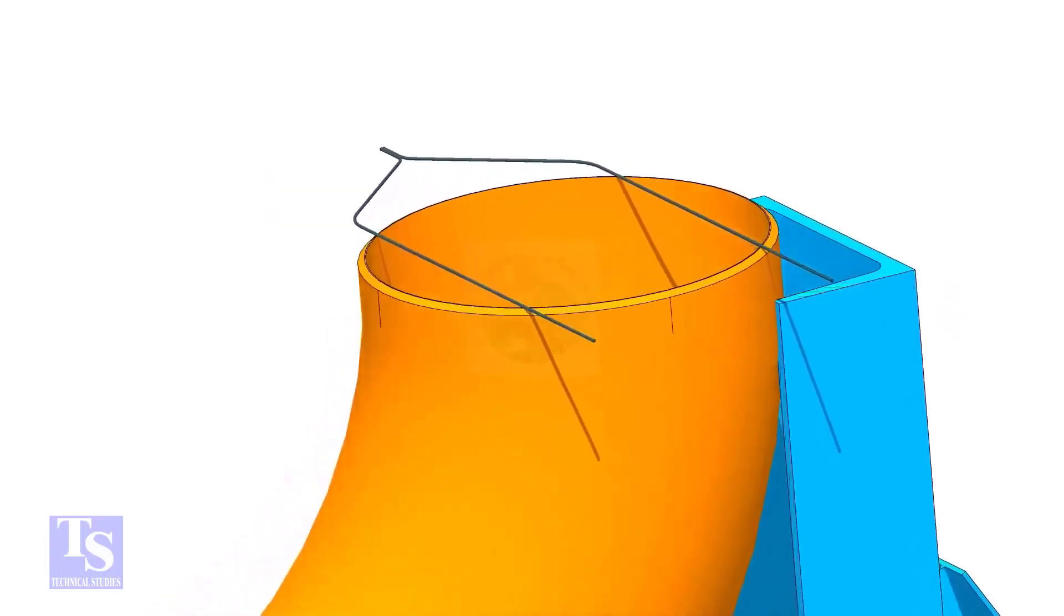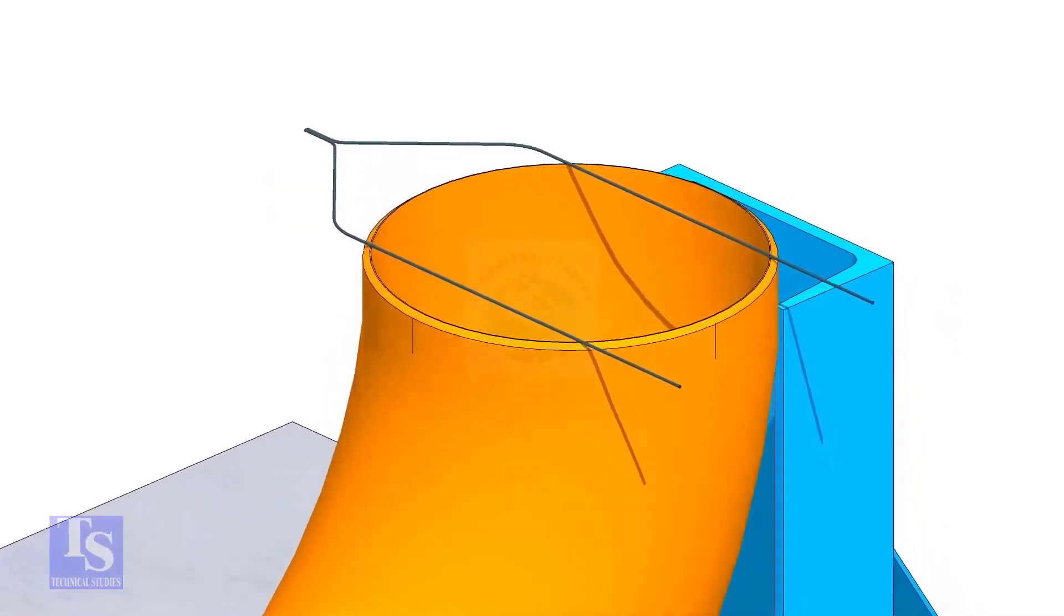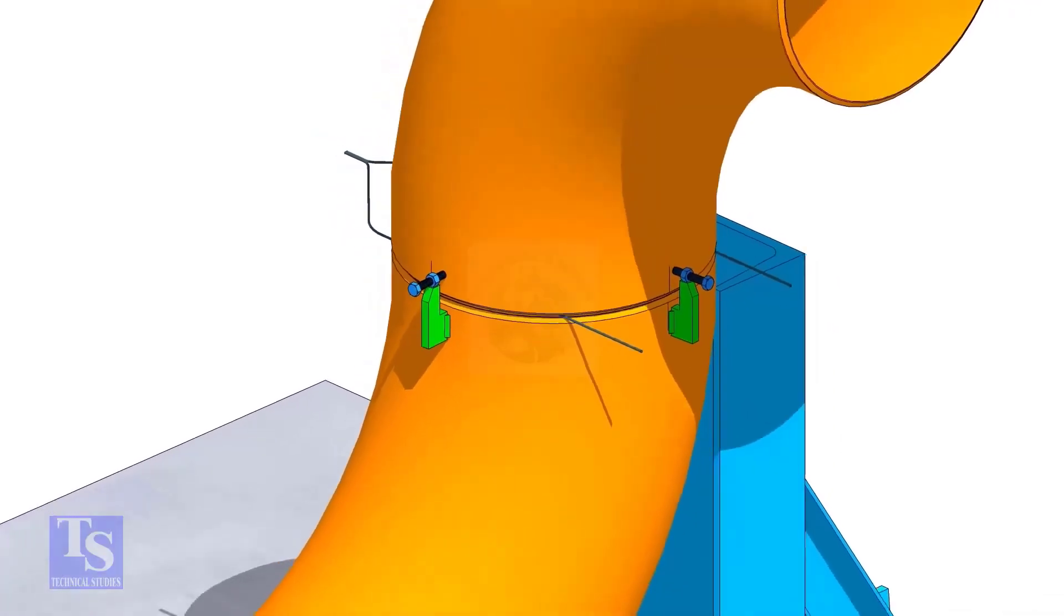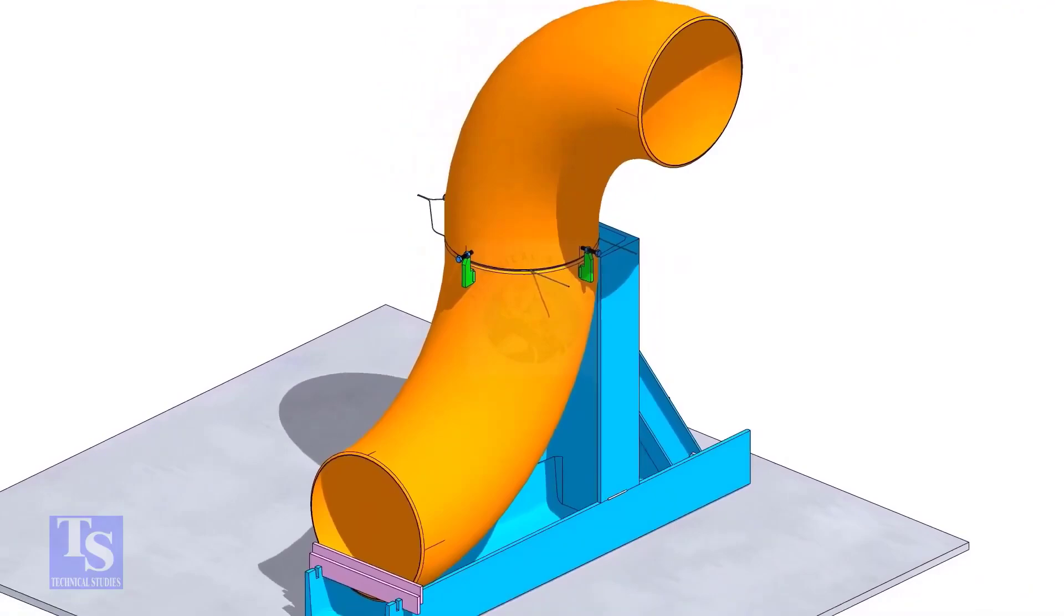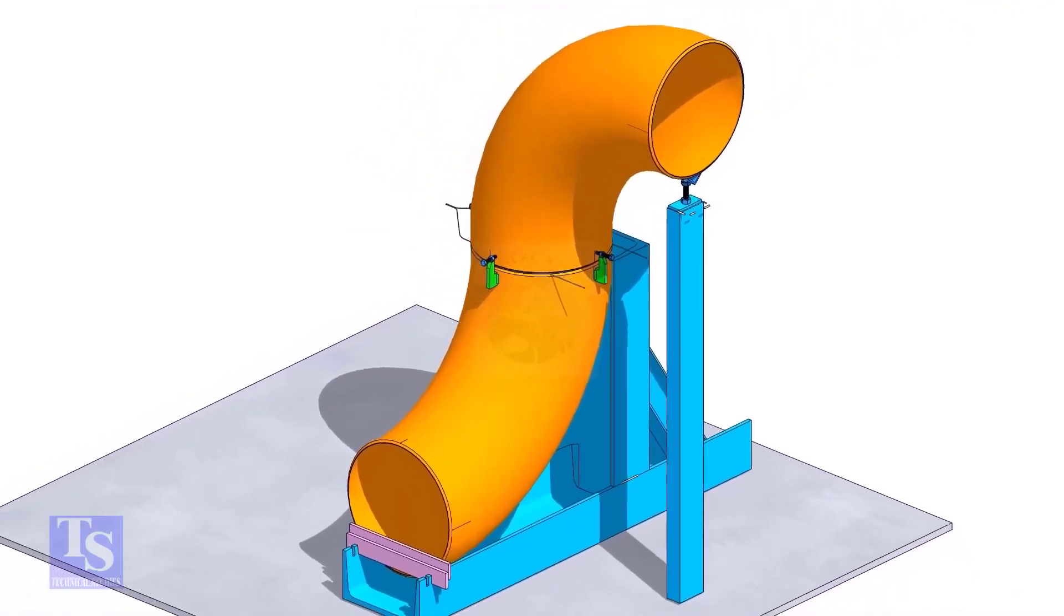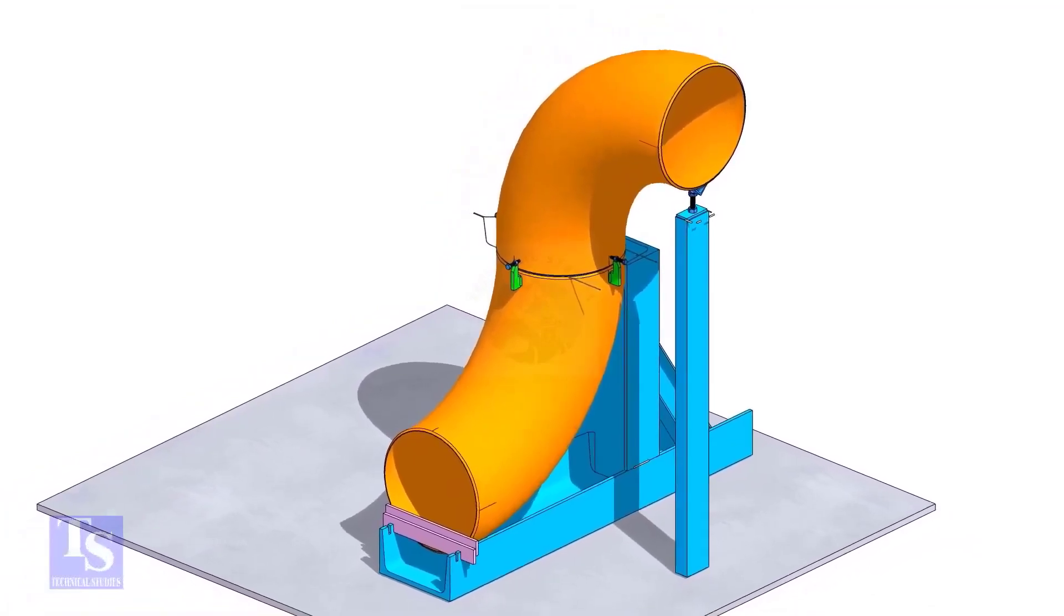Put the gap rod on the top face and tack weld four numbers jack bolts as shown. Put the other elbow and match the center lines in which direction you want to rotate the other elbow. Tack weld an adjustable support below this elbow and adjust the height.